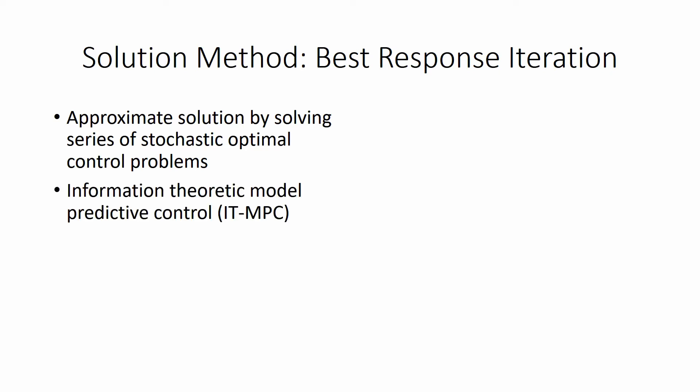In order to compute a solution to the stochastic optimal control problem on the fly, we use information theoretic model predictive control. This is a sampling-based control method which is capable of handling nonlinear dynamics and non-convex costs.